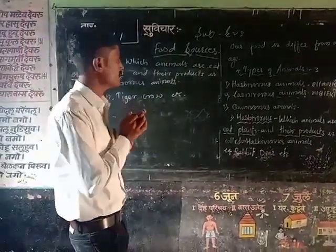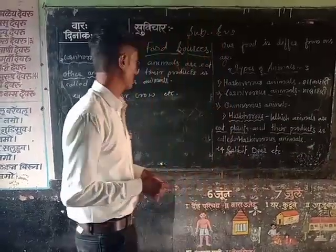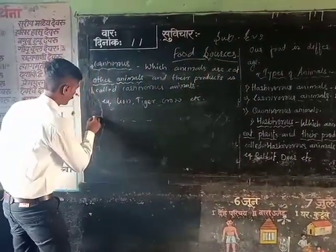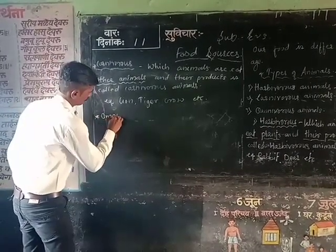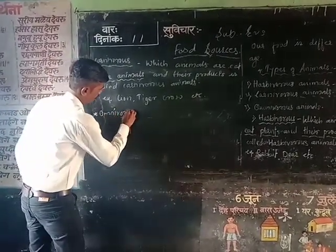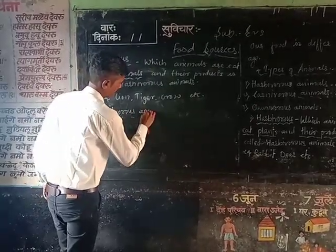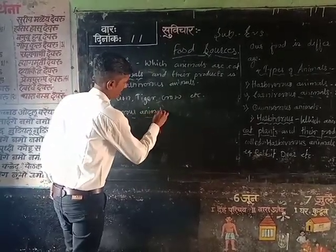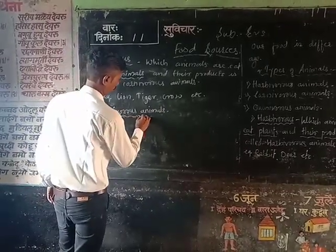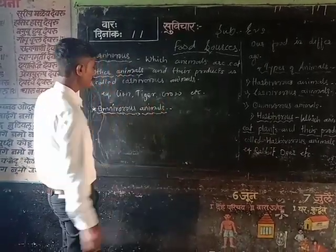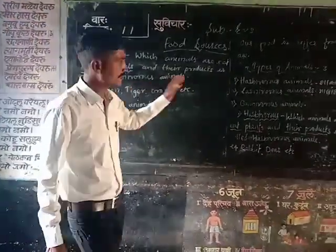So let's try the next one, which is omnivorous animals. Third one is omnivorous animals. You can guess that.